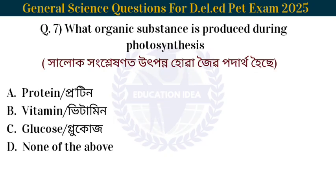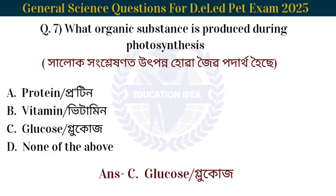Next question: What organic substance is produced during photosynthesis? The answer is glucose. The organic substance produced during photosynthesis is glucose.